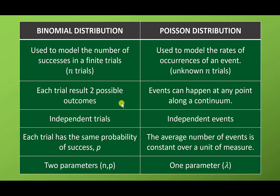Now we look at the differences between binomial and Poisson distribution. For binomial, it is used to model the number of successes in a finite number of trials, so we have n number of trials. For Poisson, it is used to model the rate of occurrence of an event, and we don't know the number of trials n. For binomial, each trial results in two possible outcomes — success and failure. For Poisson, the event can happen at any point along a continuum, meaning it only has an average or lambda, but no probability of success or failure.